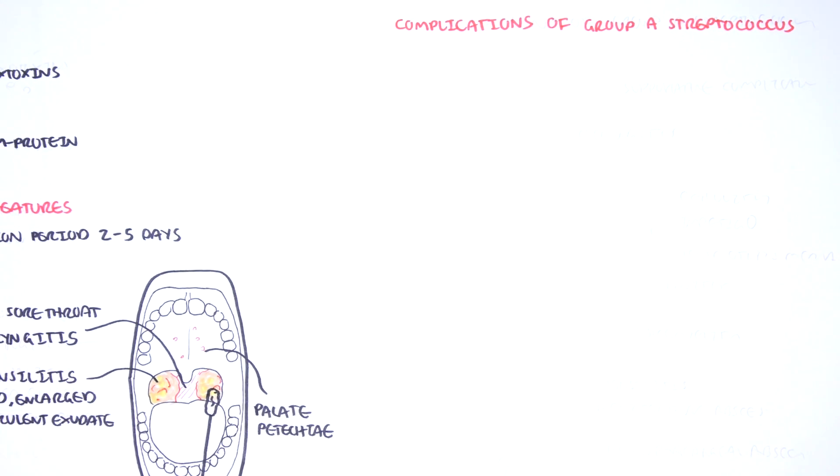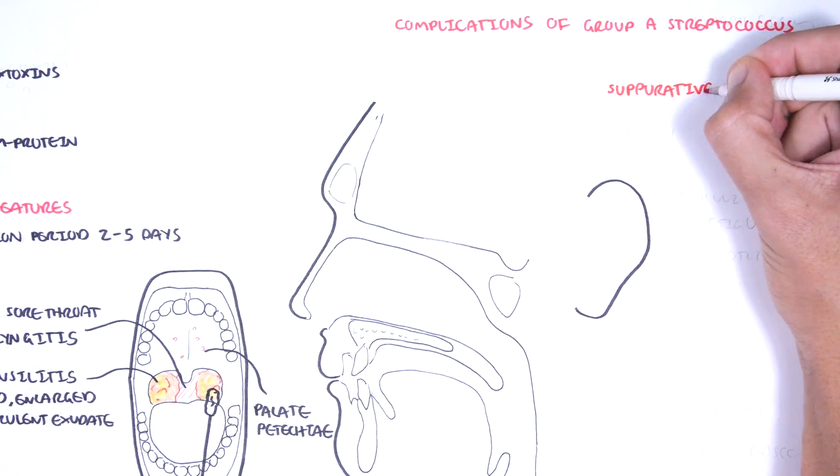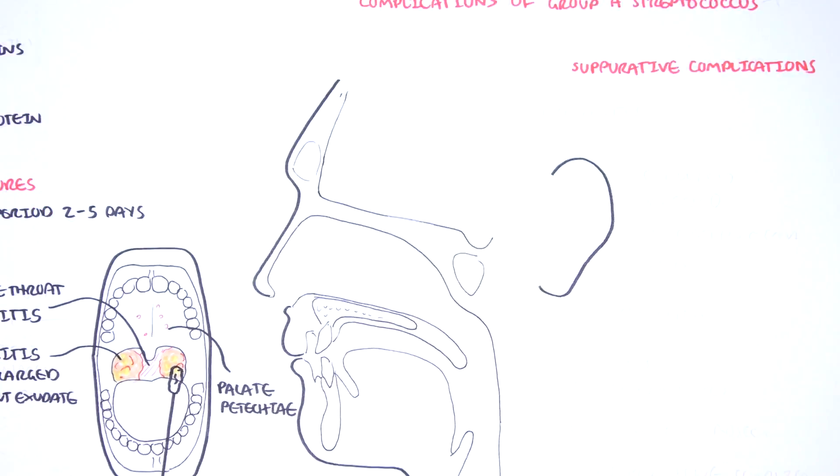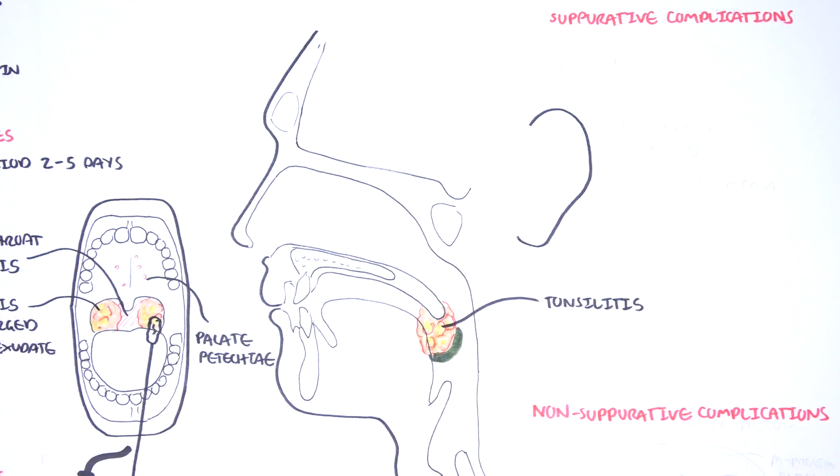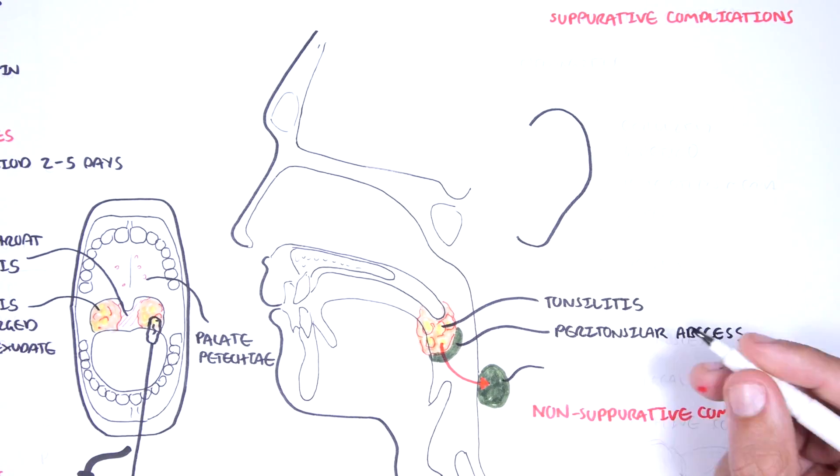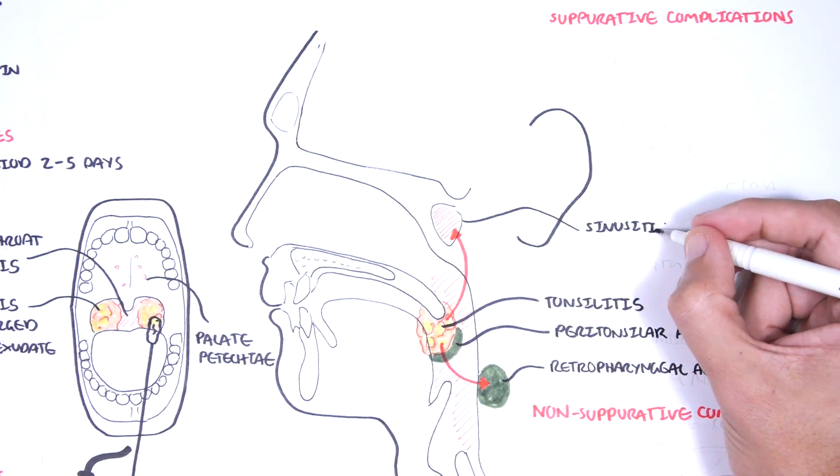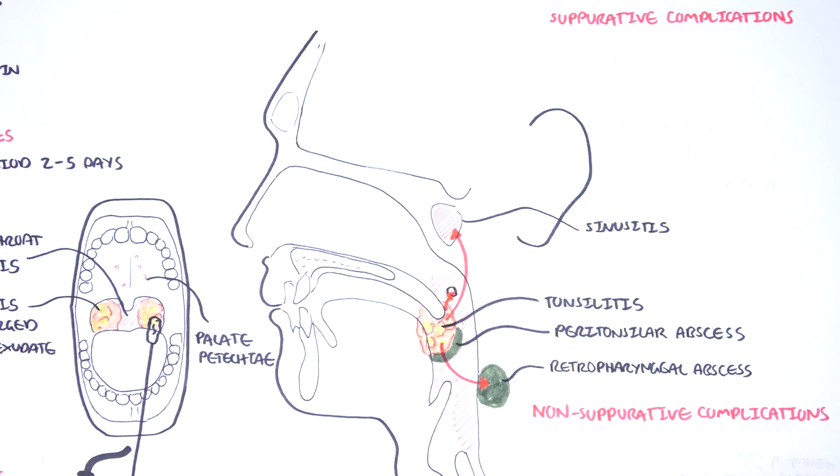Other complications of Group A Streptococcus specifically can be divided into suppurative complications and non-suppurative complications. Suppurative complications include peritonsillar abscess, parapharyngeal space abscess, or retropharyngeal abscess, sinusitis where the infection extends to the sinuses, as well as acute otitis media. The infection spreads up the eustachian tube into the middle ear cavity. Cellulitis and impetigo of different regions around the mouth as well as the ear.